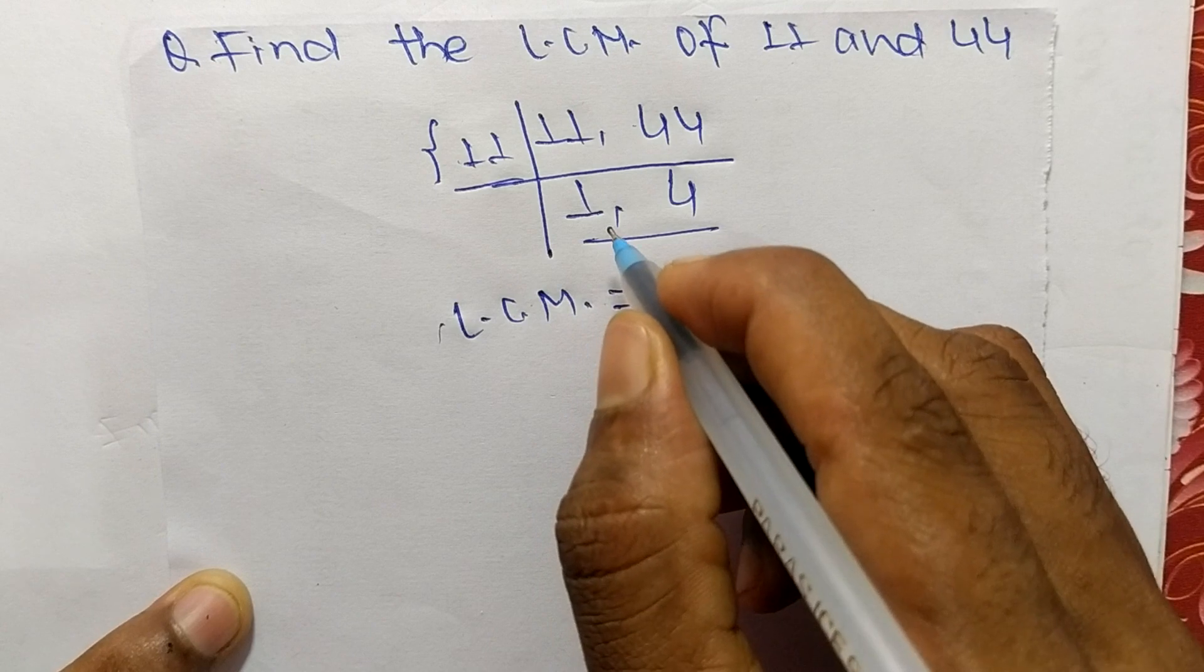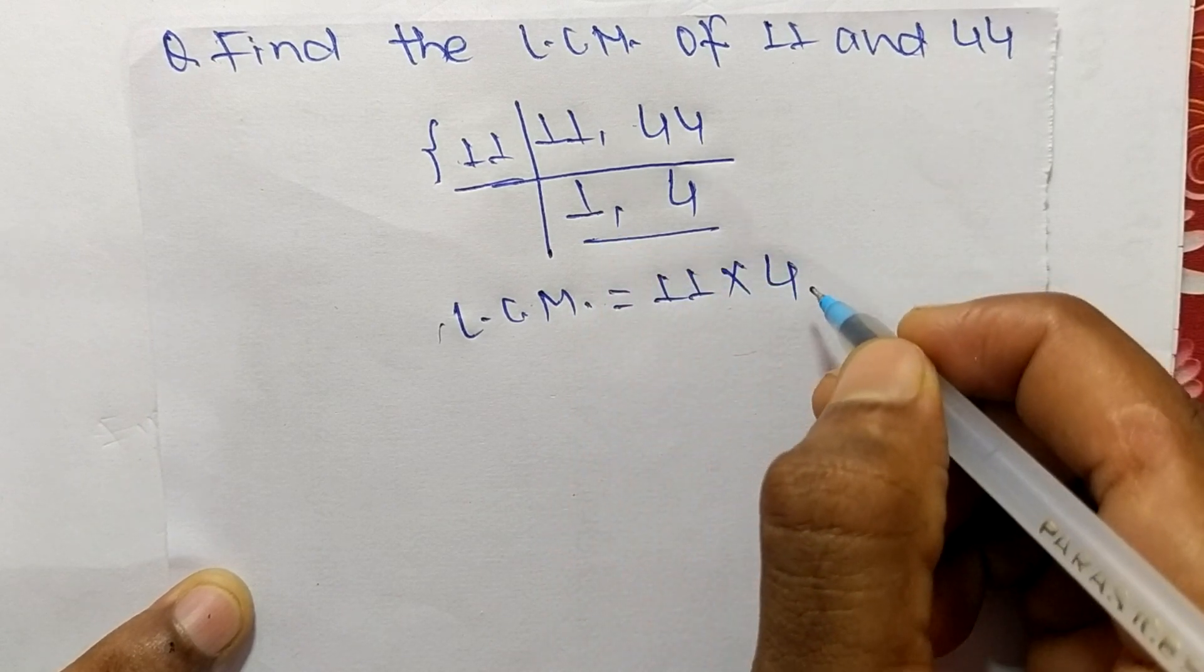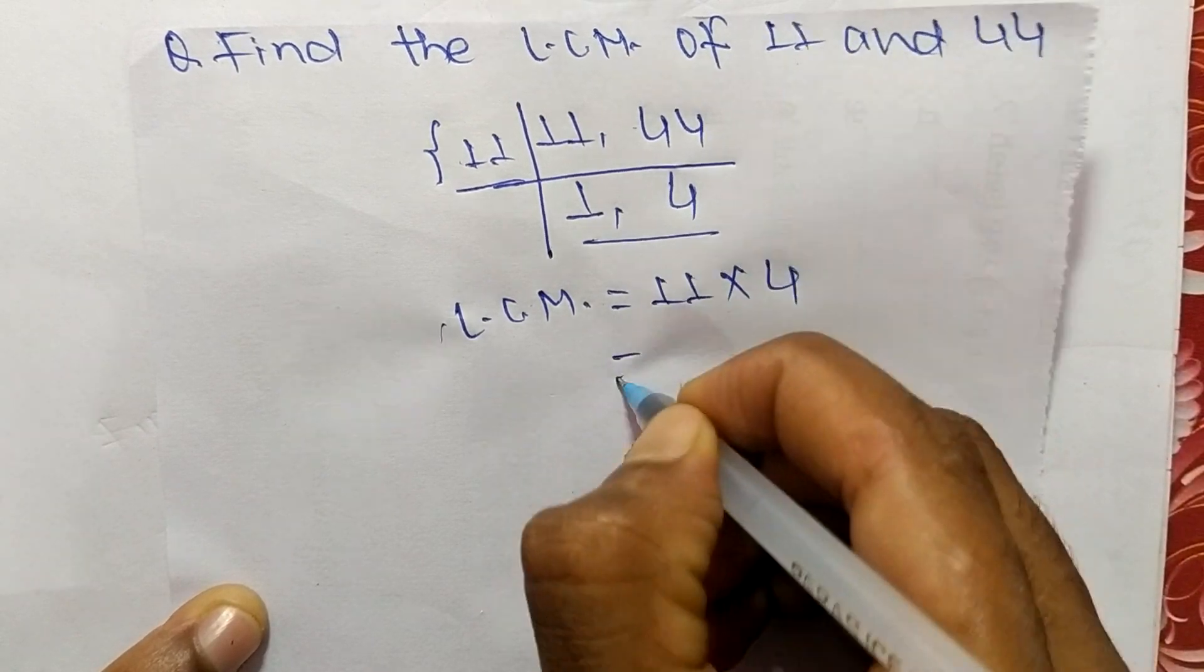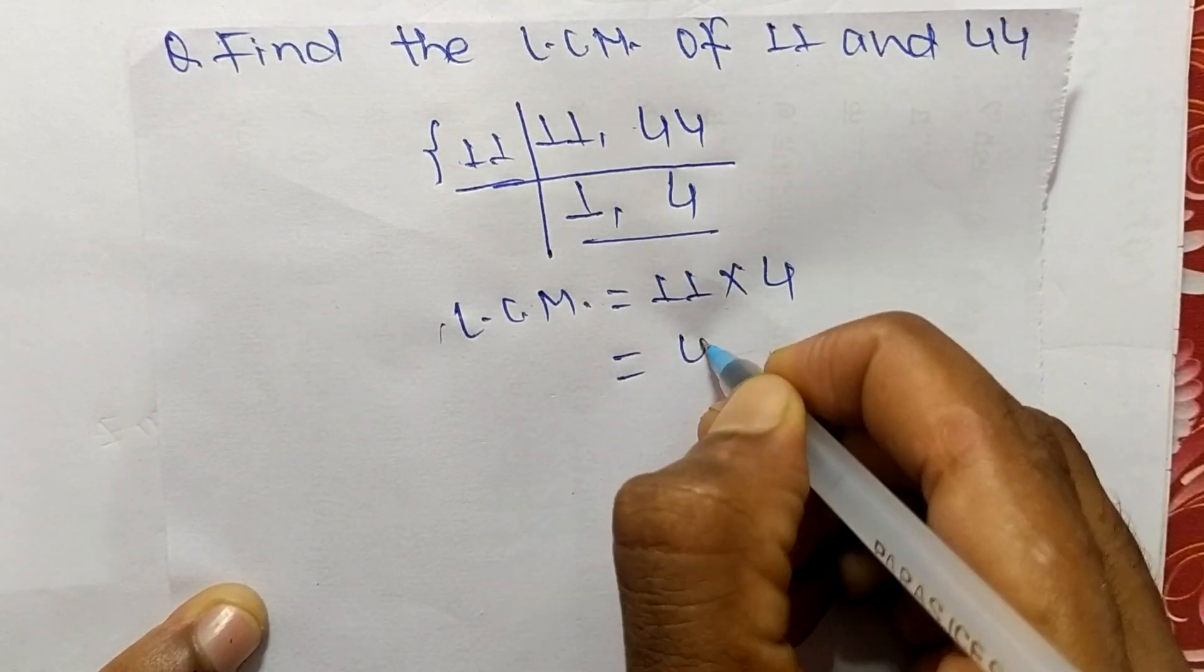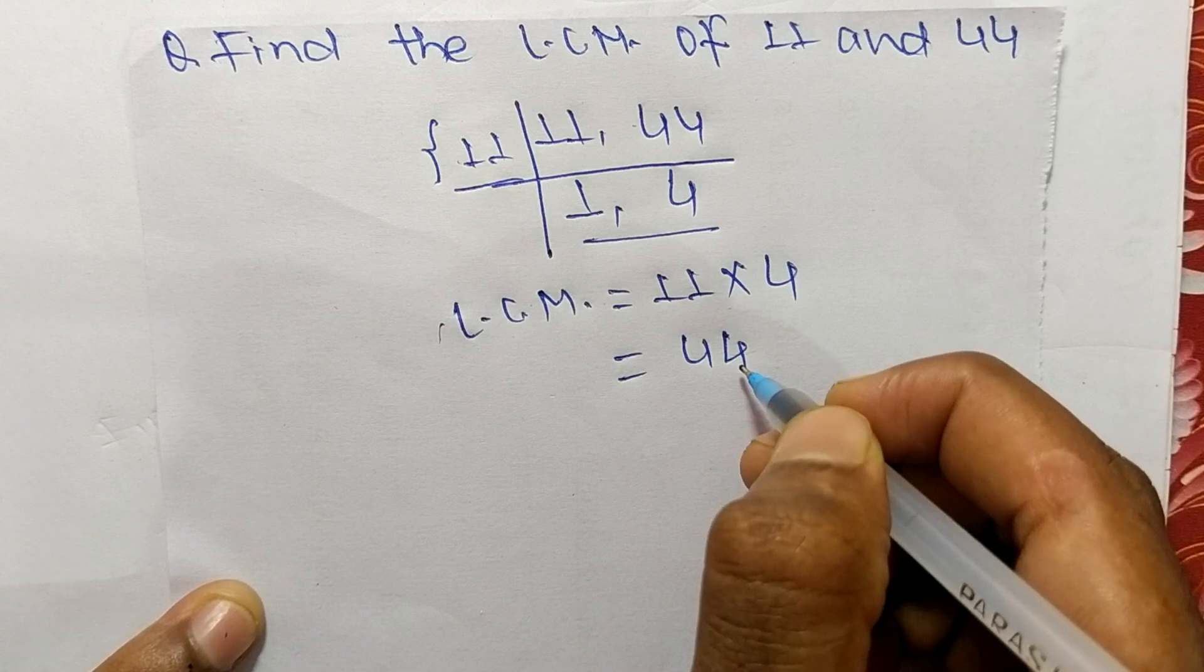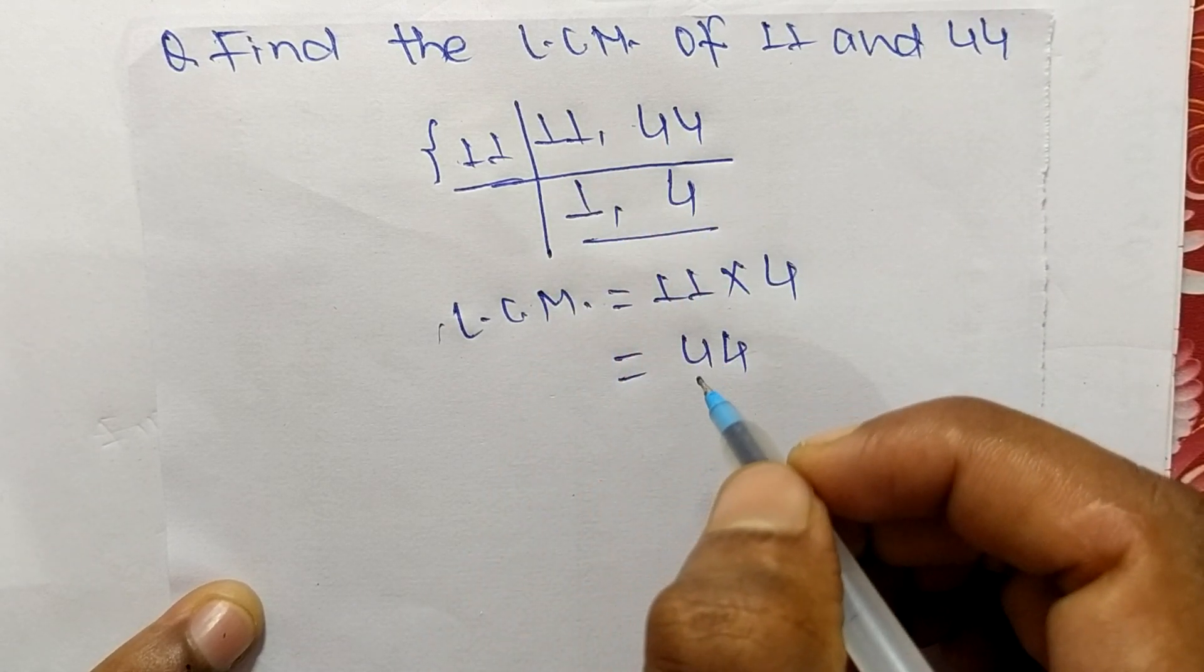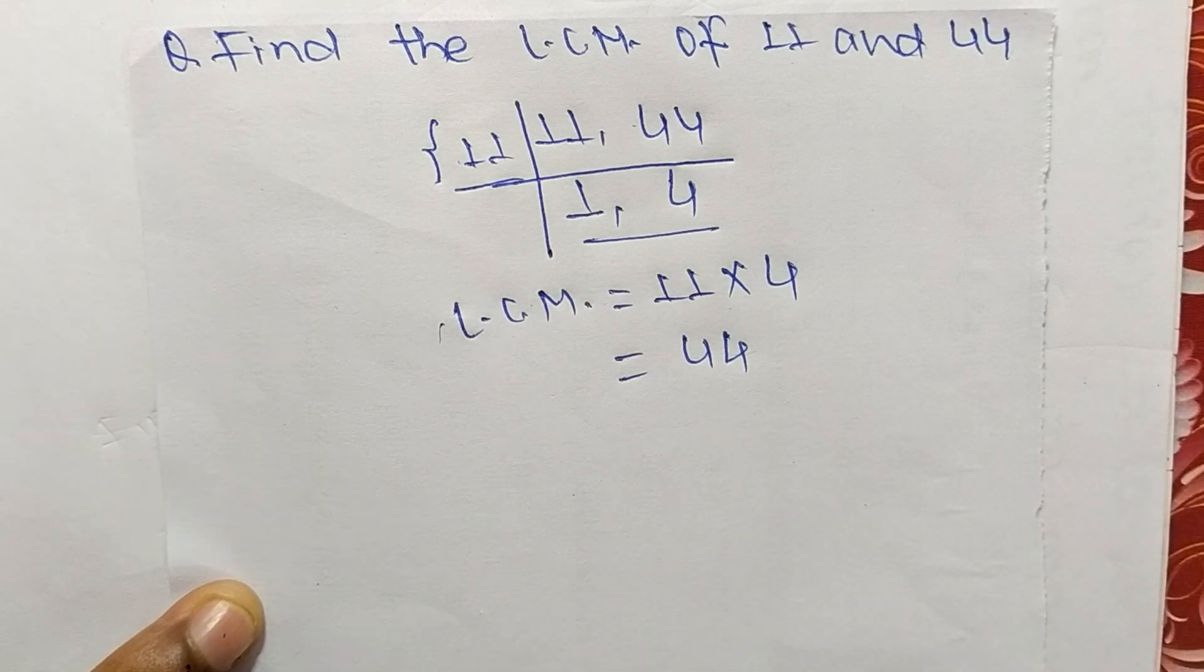Because by multiplying any number with 1 we get the same result, so it is 11 times 4, which means 44. So 44 is the LCM of 11 and 44. So this much for today and thanks for watching.